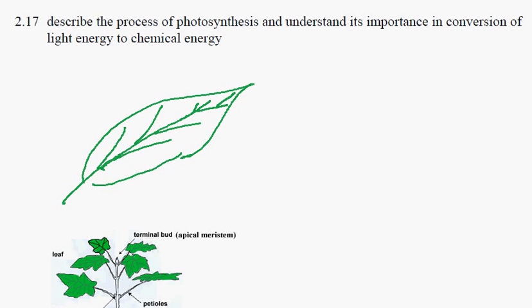Objective 2.17: describing the process of photosynthesis and understanding its importance in the conversion of light energy into chemical energy. The source of light energy is the sun.